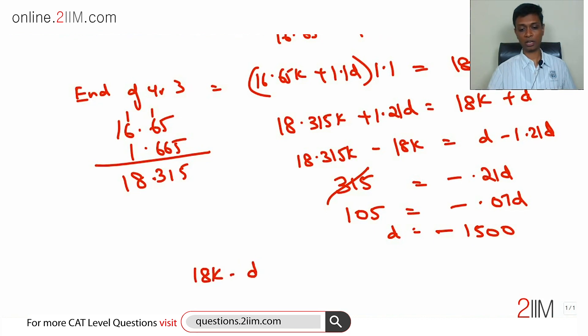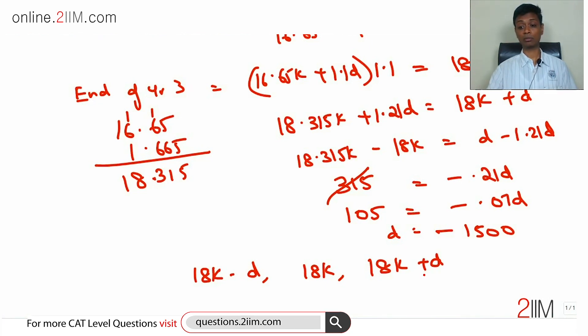Or D is 105 divided by -0.07, which is -1,500. Remember we had assumed the amounts as 18k minus D, 18k, 18k plus D. So the amount he pays is 18,000 minus (-1,500), which is 19,500 in the first year, 18,000 in the second year, and 16,500 in the third year.